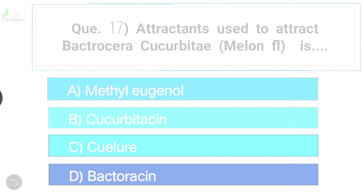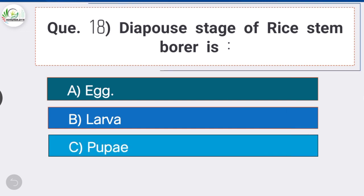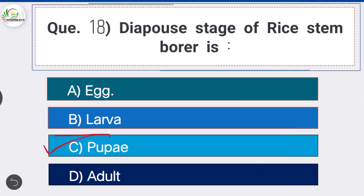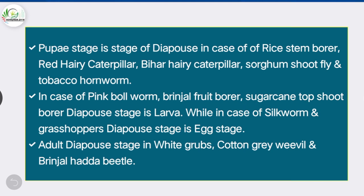Question 18: The diapause stage of rice stem borer is Option C, the correct answer: pupae. Diapause is a period of dormancy or arrested development during an insect's life cycle, usually triggered by adverse environmental conditions. Diapause may occur in any life cycle stage depending on the species. Pupae is the diapause stage in rice stem borer, red hairy caterpillar, Bihar hairy caterpillar, sorghum shoot fly, and tobacco hornworm.